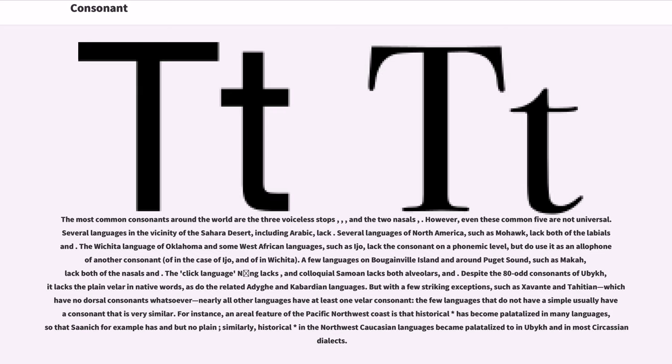The click language !Xóõ lacks /p/, and colloquial Samoan lacks both velars /k/ and /ŋ/. Despite the 80-odd consonants of Ubykh, it lacks the plain velar /k/ in native words, as do the related Adyghe and Kabardian languages. But with a few striking exceptions, such as Xavante and Tahitian, which have no dorsal consonants whatsoever, nearly all other languages have at least one velar consonant. The few languages that do not have a simple /k/ usually have a consonant that is very similar. For instance, an areal feature of the Pacific Northwest coast is that historical /k/ has become palatalized in many languages, so that Saanich, for example, has /kʲ/ but no plain /k/.